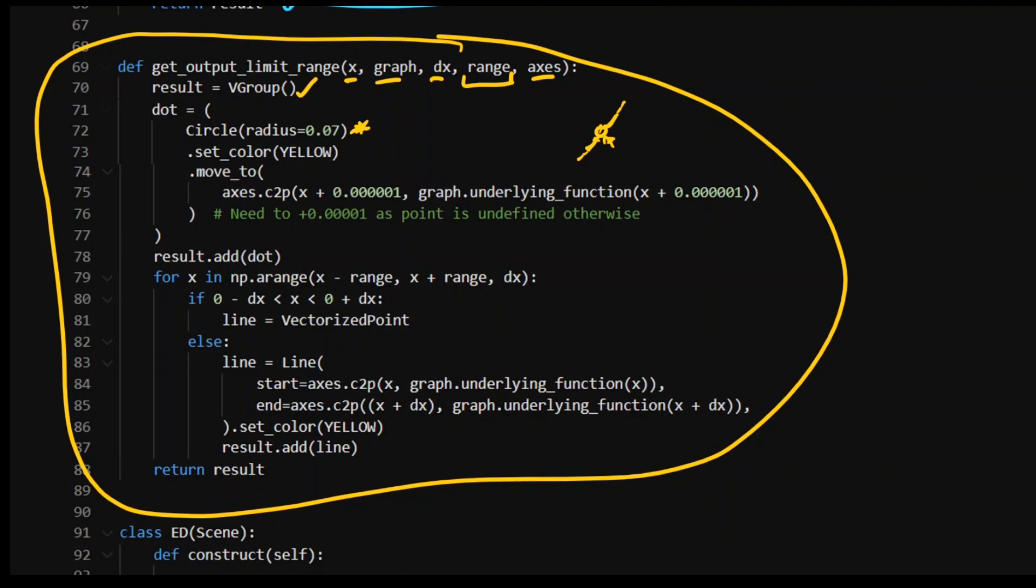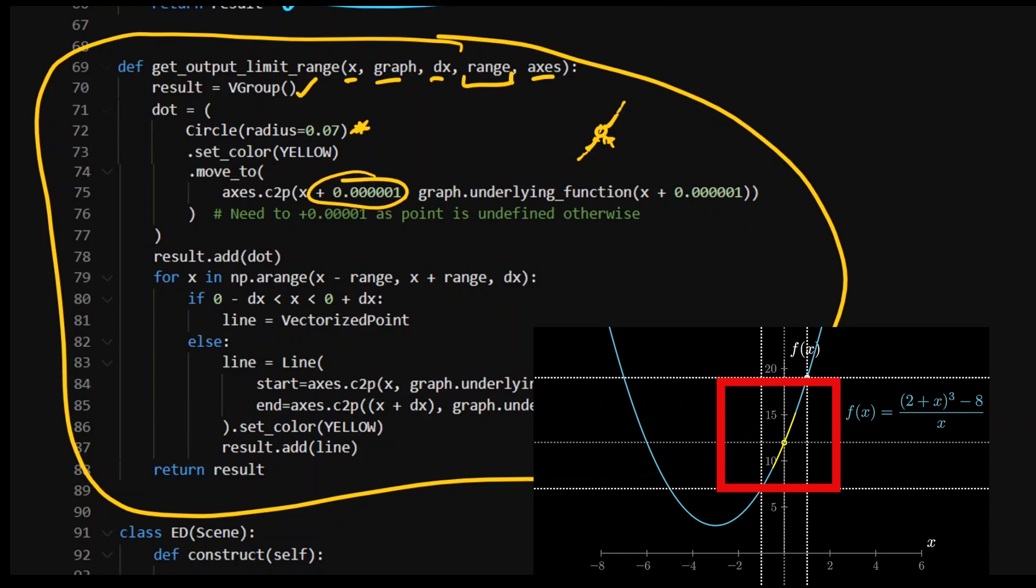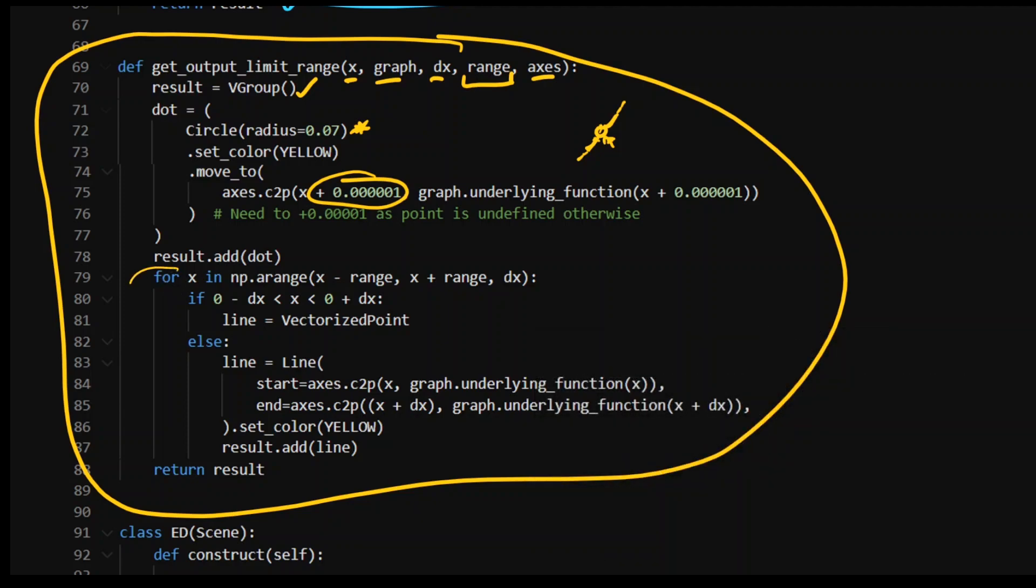I want to put a circle or a dot on that undefined point, which is, again, where that 0.0000001 is coming from. And then I want to give the effects of the line. So this is created by a for loop where I'm just creating tiny, tiny, tiny little lines. And then if the x point lies in the interval where the limit does not exist, return a vectorized point because nothing's going to happen otherwise.